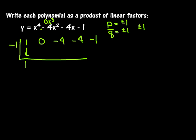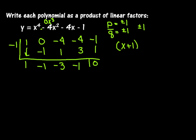I'm going to bring down my one. Negative one times one is negative one. I add down to get negative one. Negative one times negative one is one. Add down to get negative three. Negative one times negative three is positive three. I add down to get negative one. Negative one times negative one is one. And when I add down, I get zero.